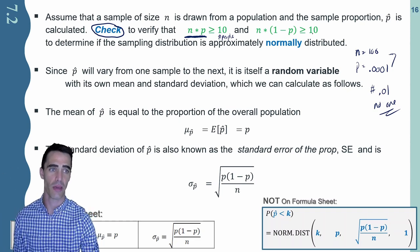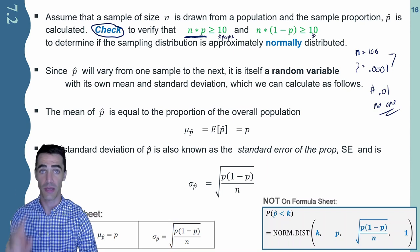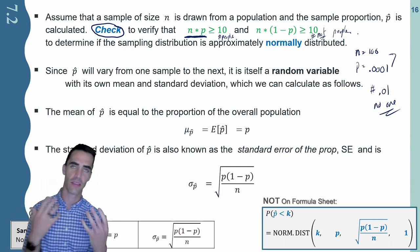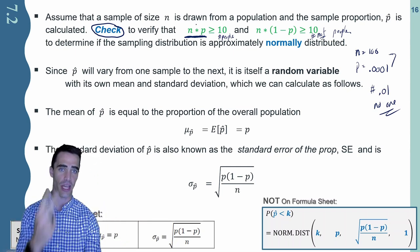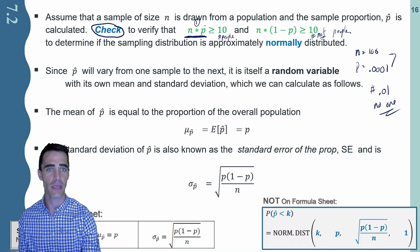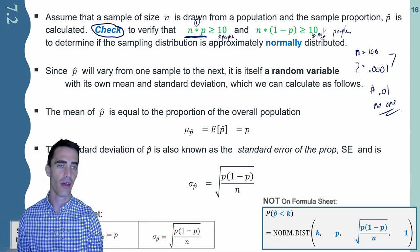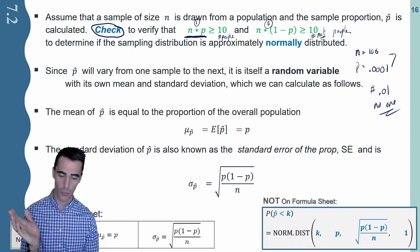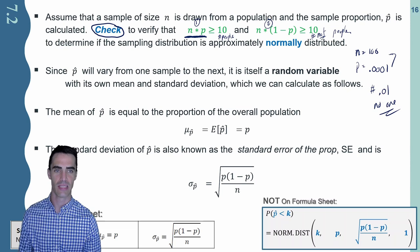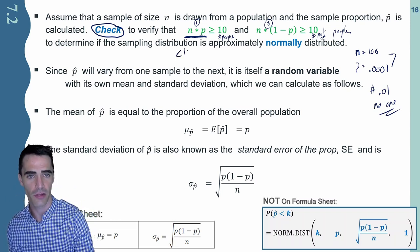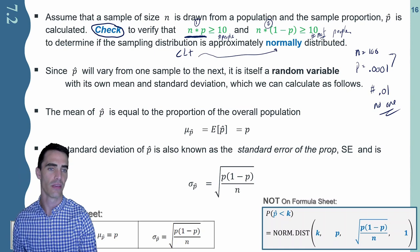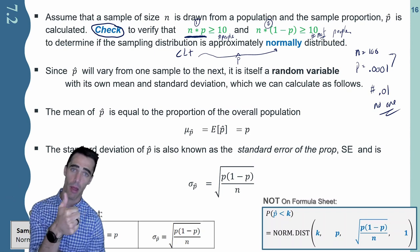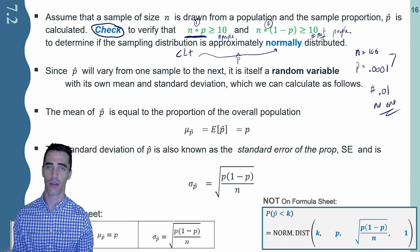On the flip side, if I have n times one minus p, I should have at least 10 people who basically say no, or do not have the characteristic I'm interested in. So there are actually two things to check: n times p, the number of people we expect to have the given trait, and n times one minus p, the number of people who are not interested in what we're selling. If both of these are true, then by the central limit theorem, just like for sample means, the sample proportions are normally distributed — which gives us a lot of power to talk about probability, percentiles, and other calculations.